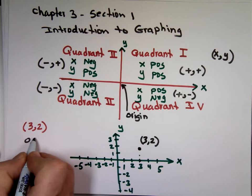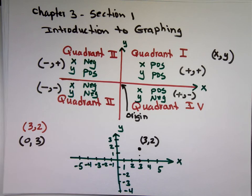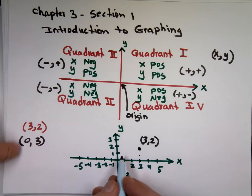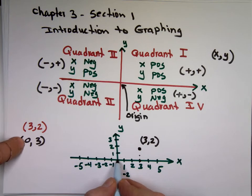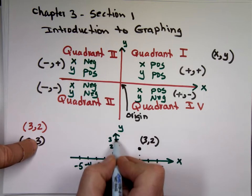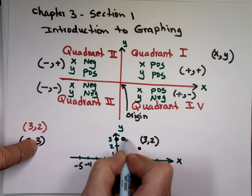(0,3). Start at the origin. And how many units are you going to move in the x direction? 0. That means stay there and move 3 in the y direction, plus 3. That means go up. That's right here. That's (0,3).